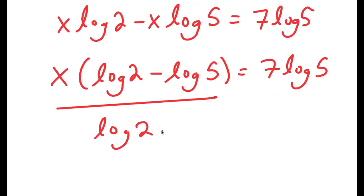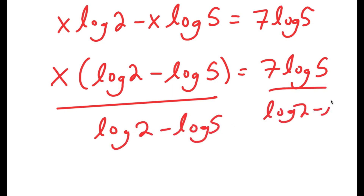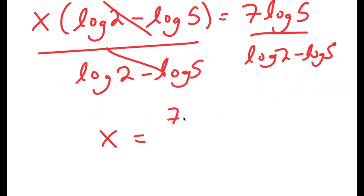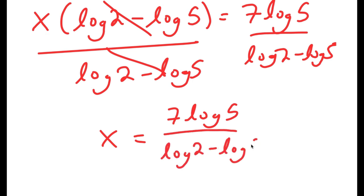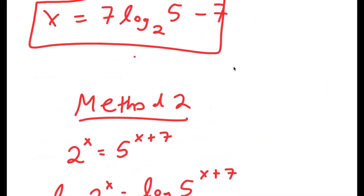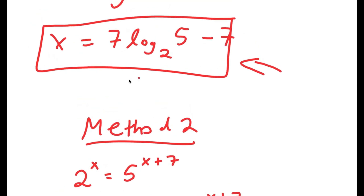Dividing both sides by log 2 minus log 5, these two cancel out and I get x equals 7 times log 5 over log 2 minus log 5, which again simplifies to x equals 7 times log base 2 of 5 minus 7. So that is my answer.